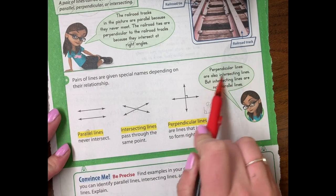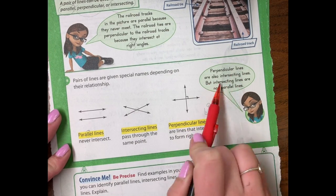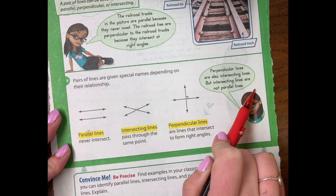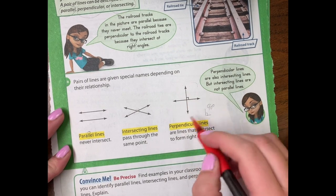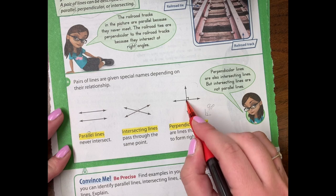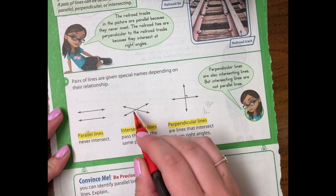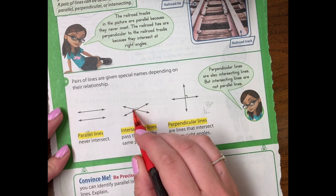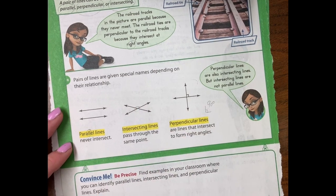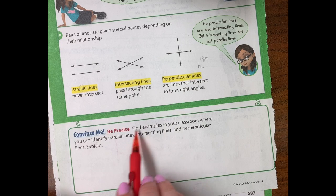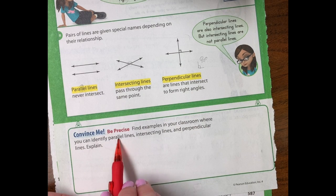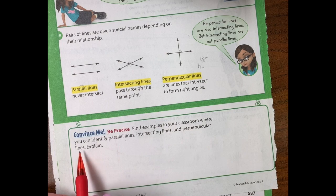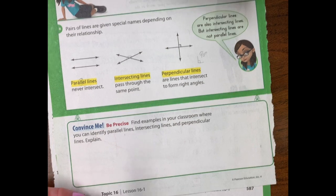Perpendicular lines are also intersecting lines, but intersecting lines are not parallel lines. This perpendicular line, they intersect right there. But these intersecting lines are not perpendicular because there's no right angle formed. Here's an obtuse angle and here's an acute angle, but no right angle. Find examples in your classroom where you can identify parallel lines, intersecting lines, and perpendicular lines and explain.